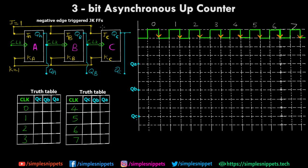Since this is a 3-bit asynchronous counter, it will count 2 raised to 3, which is 8 values. Since it's a 3-bit counter we are using 3 JK flip-flops. Let's start off with the clock cycle diagram and we'll understand the truth table later from the clock cycle diagrams.